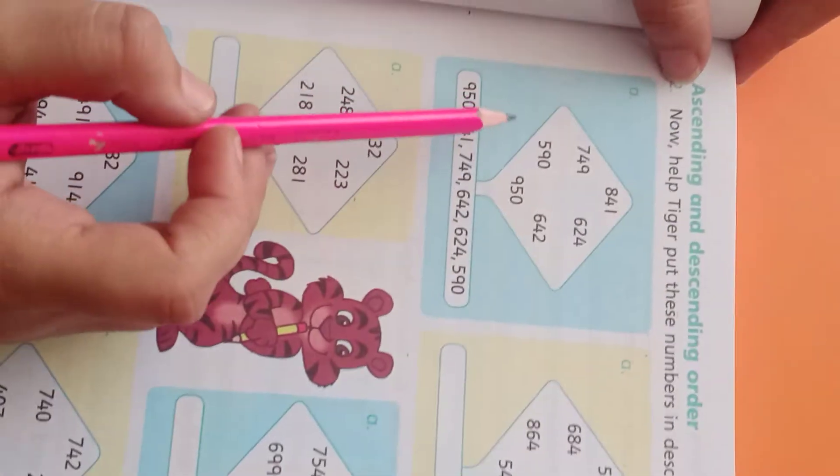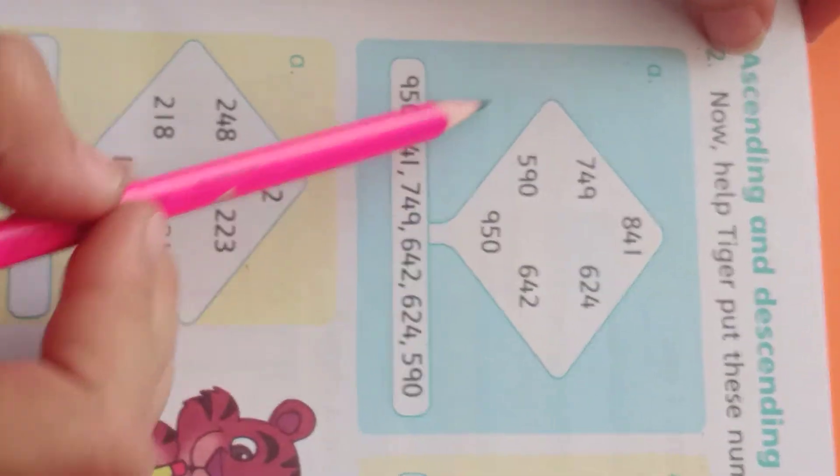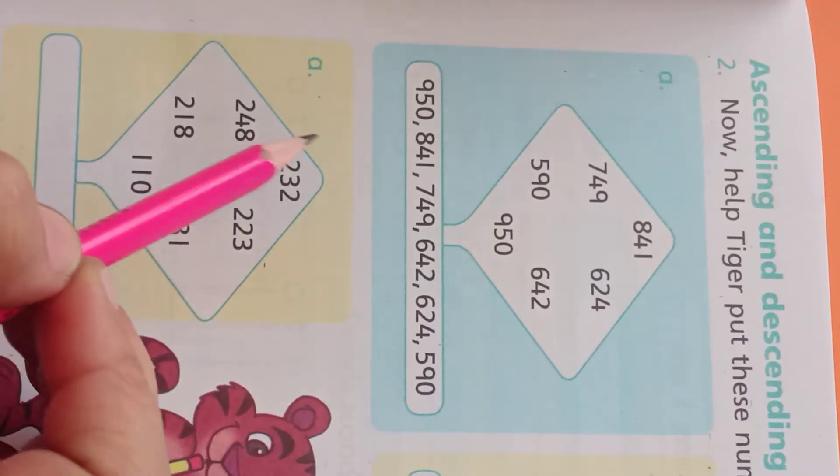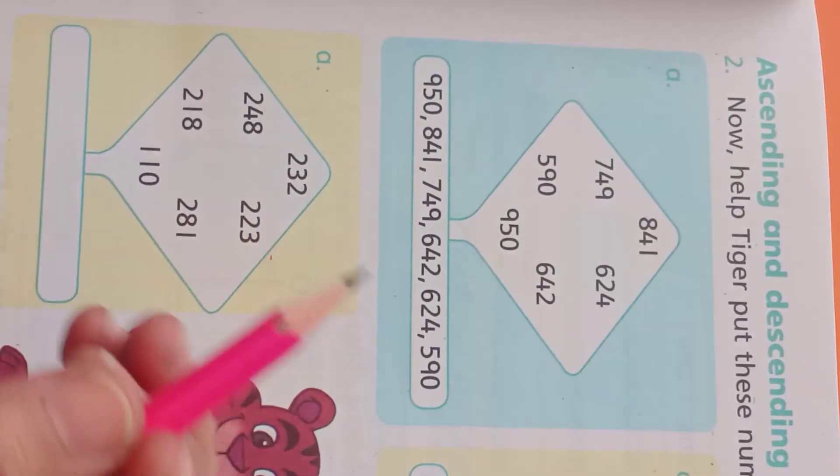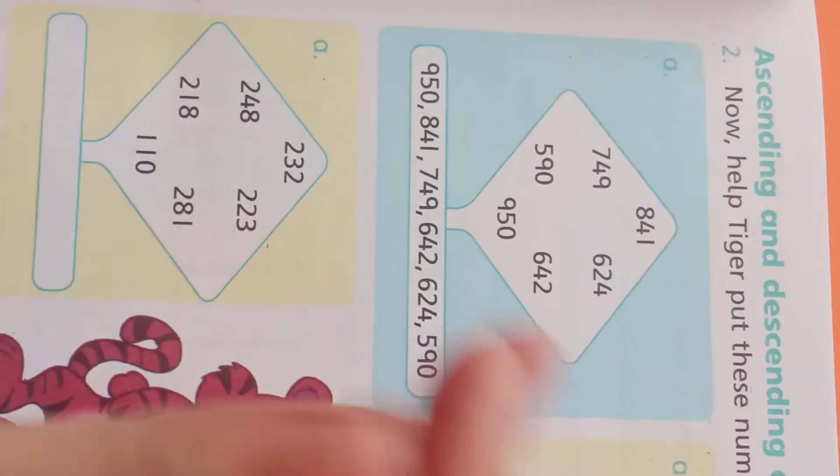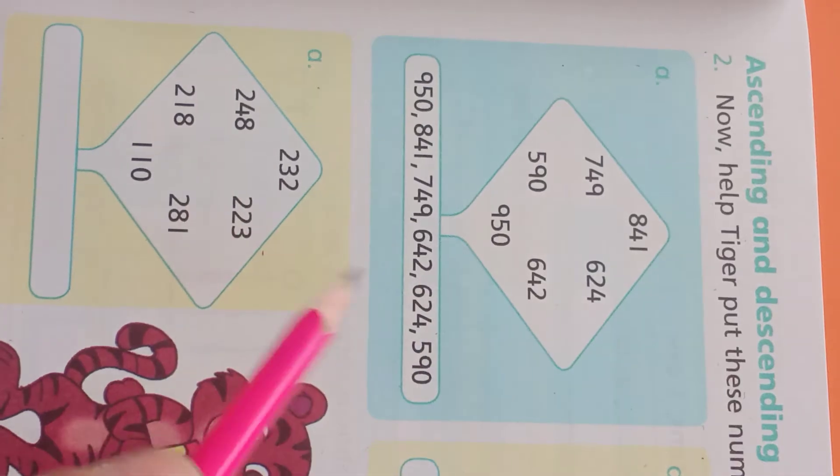It's your first question. Question number 1. Here are the amounts, different amounts, and you have to put them in descending order. Let's start. Descending order means up to down, you have to go from big to small amount.